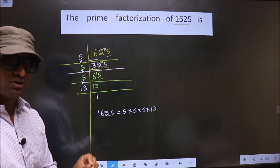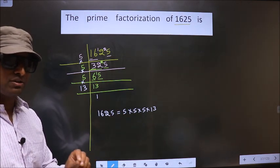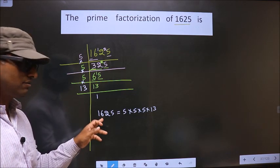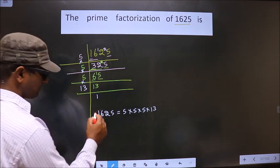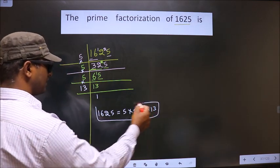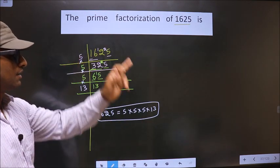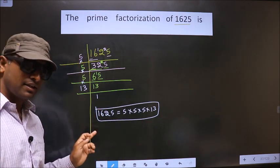This is also called as product of prime numbers of 1625. So this is our answer. Am I clear?